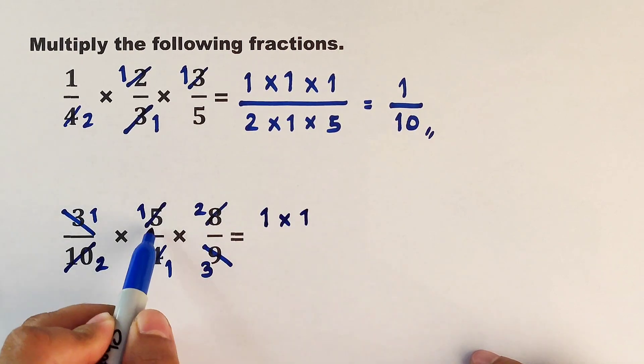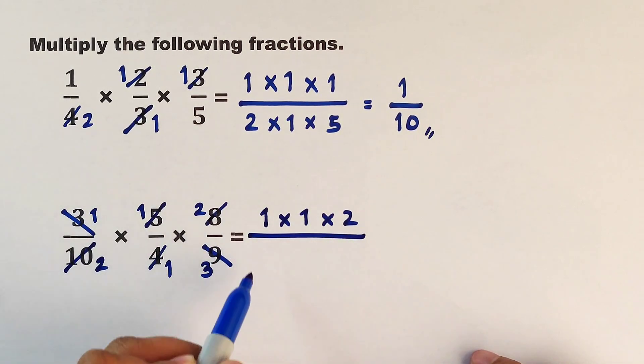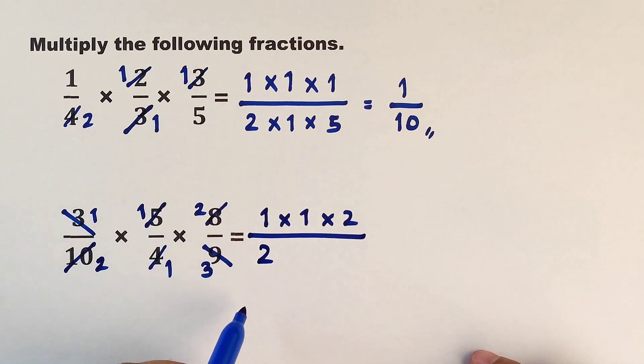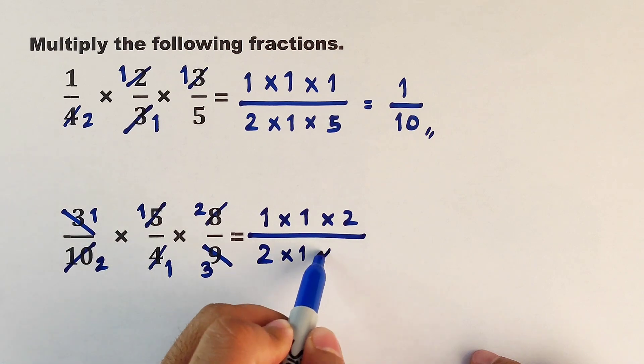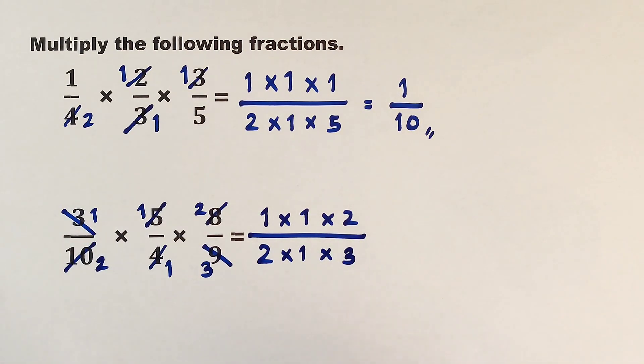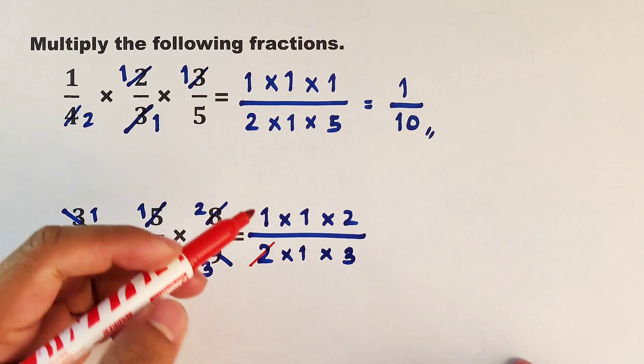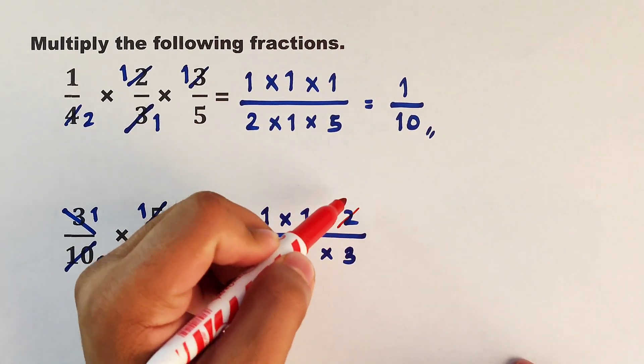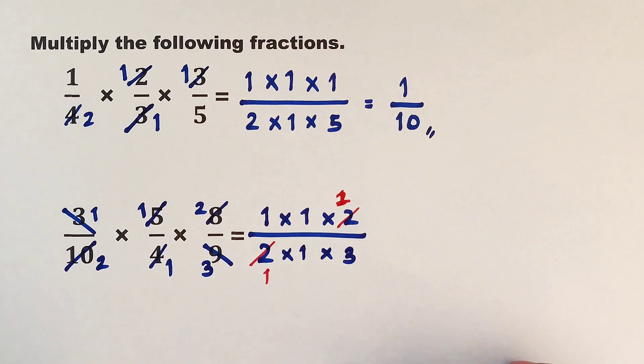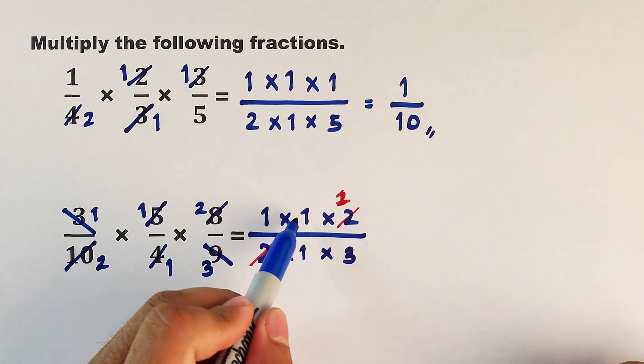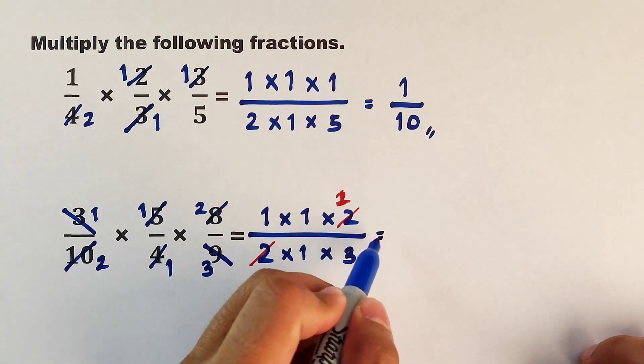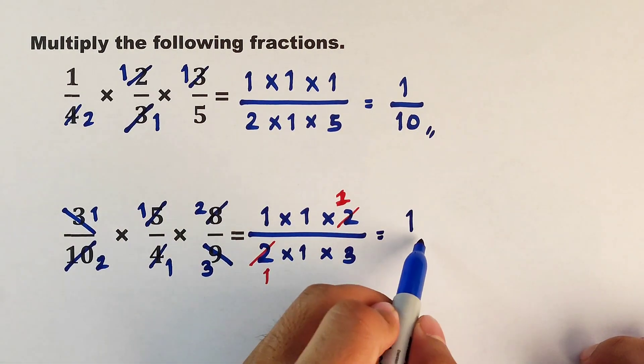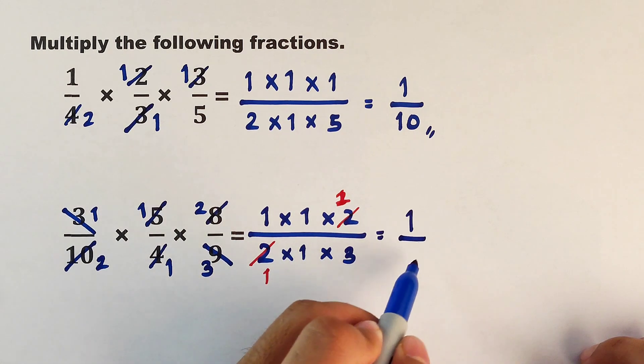And as you can see, guys, we can still simplify some of the numbers. This 2 will become 1, this 2 will become 1 also. And we can multiply them easily: 1 times 1 times 1 over 1 times 1 times 3, that is equal to 3. And as you can see, this is the final answer.